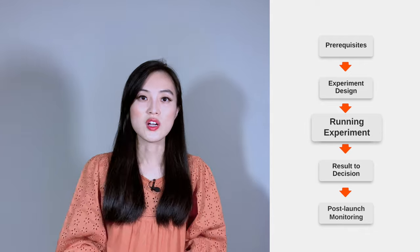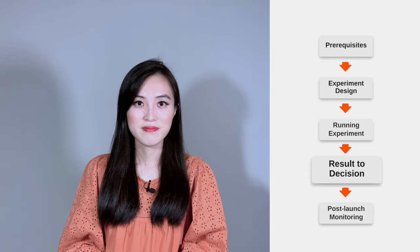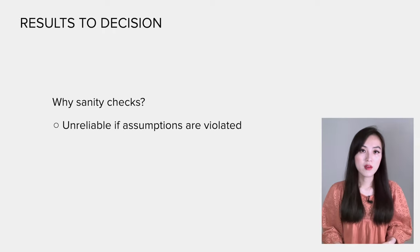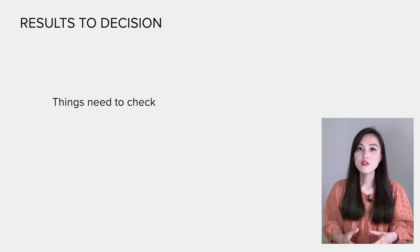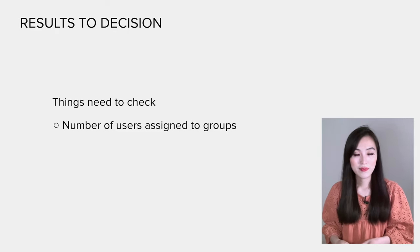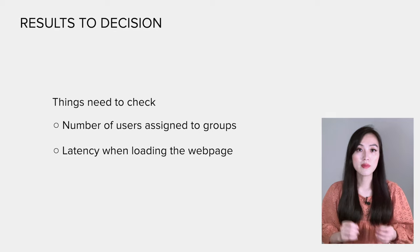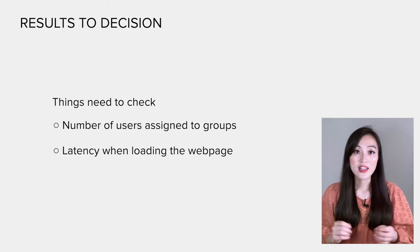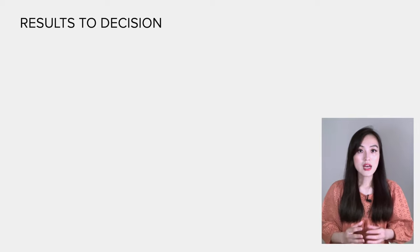After designing the experiment, we start running it and collecting log data. Before diving into analysis, we first need to do sanity checks. These checks are important because the results are unreliable if our assumptions are violated. For this example, we check whether the number of users matches our design, whether users are truly randomly assigned to each group, and we also check the latency when loading the checkpoint page in treatment 1 and the pop-up window in treatment 2 — ensuring no significant latency and consistent user experience across groups. Suppose the results pass these checks; we can then use hypothesis testing to make recommendations.